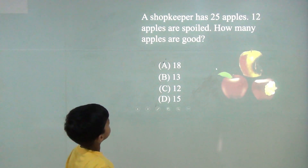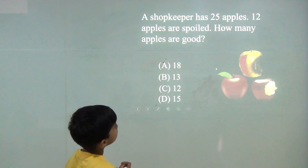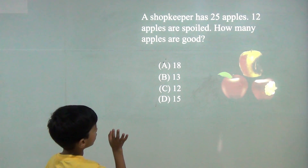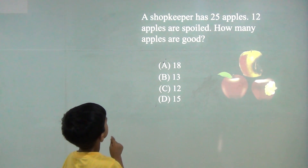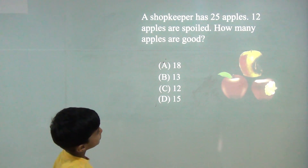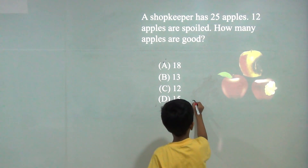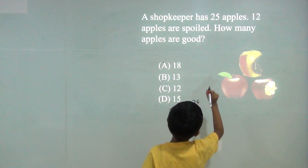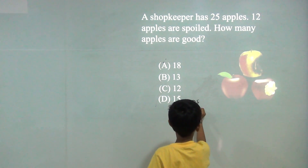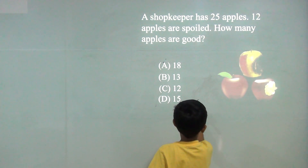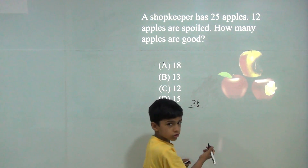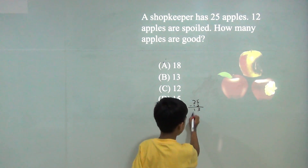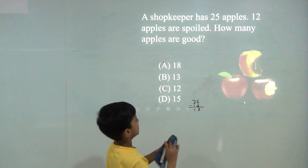A shopkeeper has 25 apples and 12 apples are spoiled. How many apples are good? 25 minus 12. 5 minus 2 is 3, 2 minus 1 is 1. So the answer would be 13.